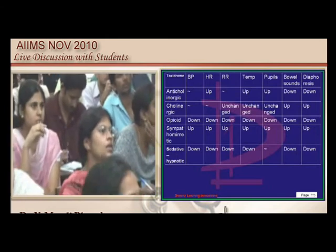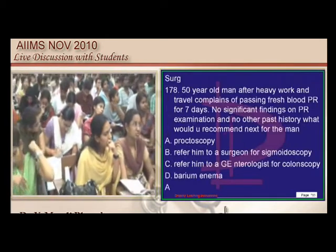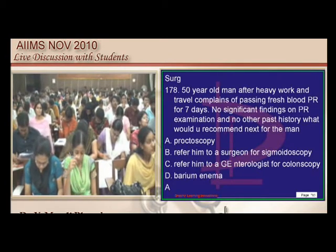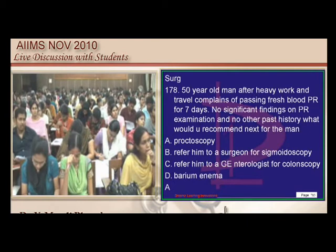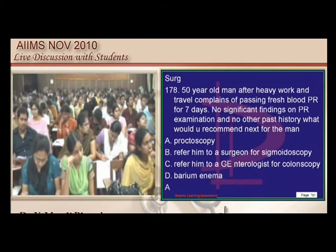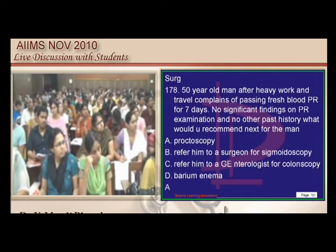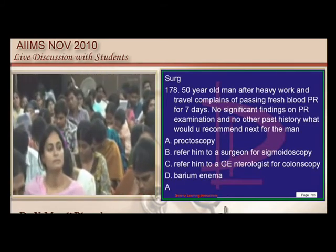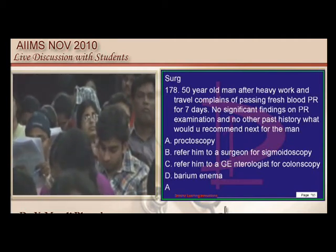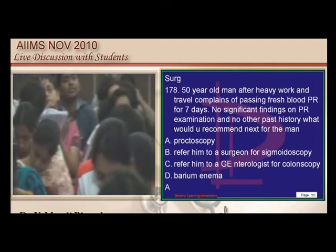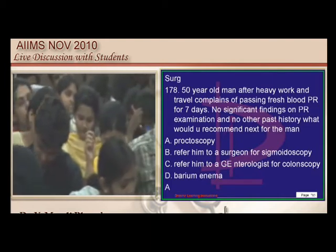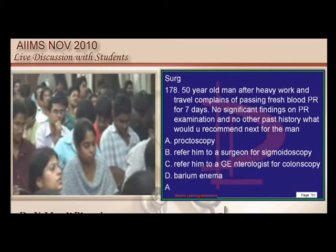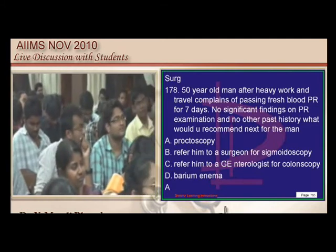A 50-year-old with fresh blood per rectum for 7 days after heavy work and travel, with no other history and nothing found on PR examination: most likely hemorrhoids. However, the general protocol before sigmoidoscopy or colonoscopy is to do proctoscopy first, so proctoscopy is recommended.